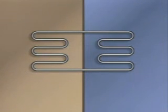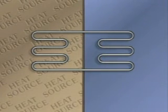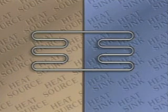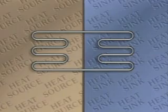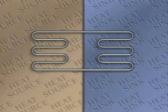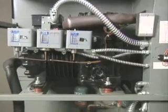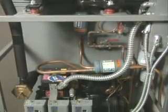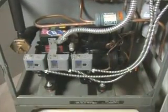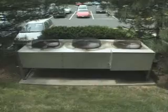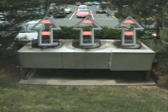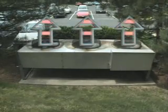These two substances can be called by names that are helpful in identifying what is happening in a refrigeration system. The substance that heat is transferred from is the heat source, and the substance that heat is transferred to is the heat sink. Every refrigeration system has a heat source and a heat sink. For example, in an air conditioning system, the heat source is the air in the office space being cooled, and the heat sink is the outside atmosphere, which receives the heat from the air conditioning system.